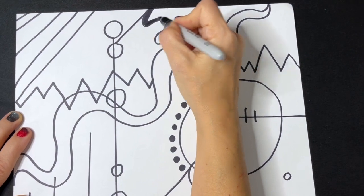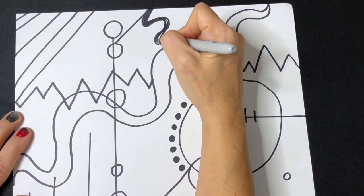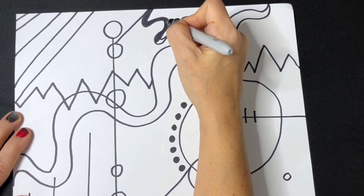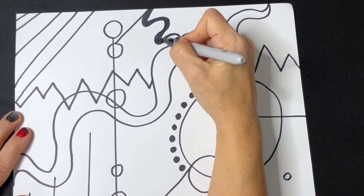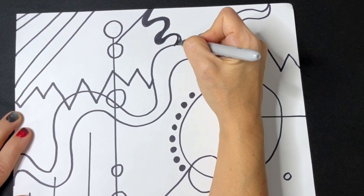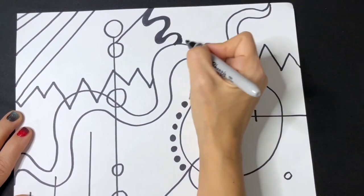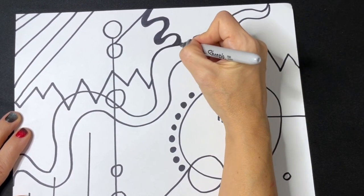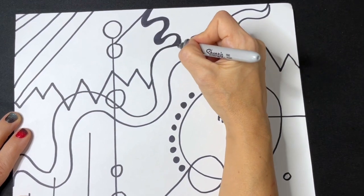I'm going to make some of the lines thick and some of them thin. Some are straight, some are curvy, some are thick, and some are thin. We want to have a variety of shapes and lines and colors in our artwork.